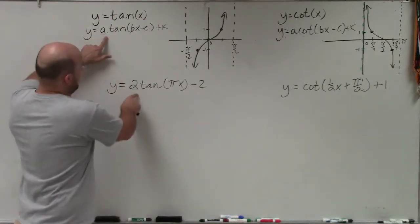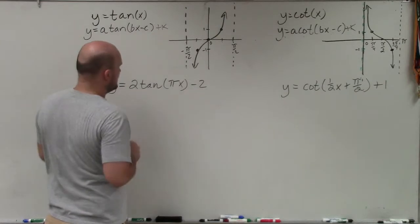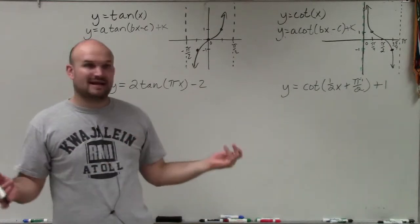So you can see here we have an a, I have a b. In this problem, I do not have a c, but I do have a k. So remember, there is no amplitude.